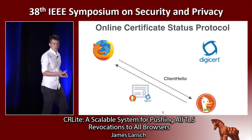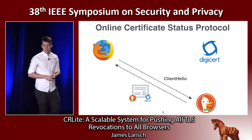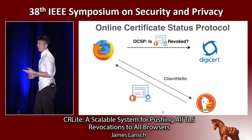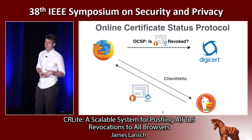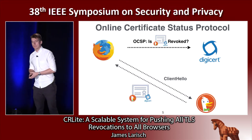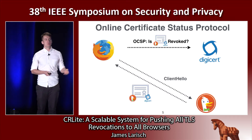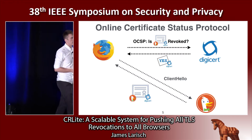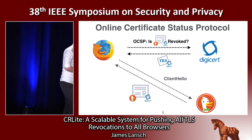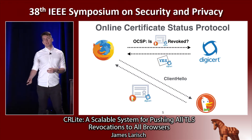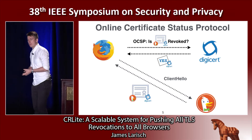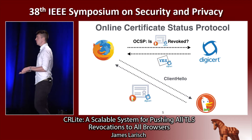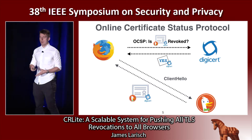Rather than asking for all revocations, the browser can simply ask the certificate authority if the given website's certificate is revoked. That's exactly the idea behind Online Certificate Status Protocol, or OCSP. The browser says, is this website's certificate revoked? The certificate authority responds with a signed response and the browser acts accordingly. But OCSP introduces a constant latency penalty, and the certificate authority now knows that the browser has visited the given website.